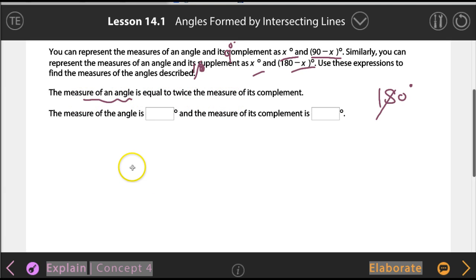The measure of an angle, let's call it A for angle. So that is equal to twice the measure of its complement. What would the complement of angle A be? That's going to be 90 minus A. So it's going to be twice the measure of its complement, and that's the measure of this angle. Is this easy or what?